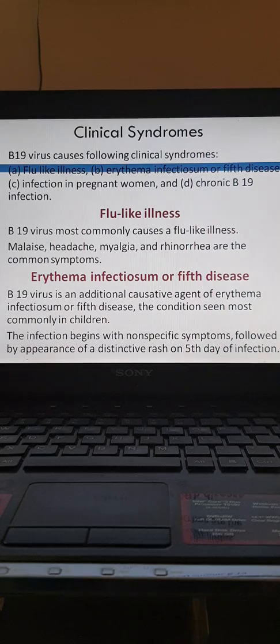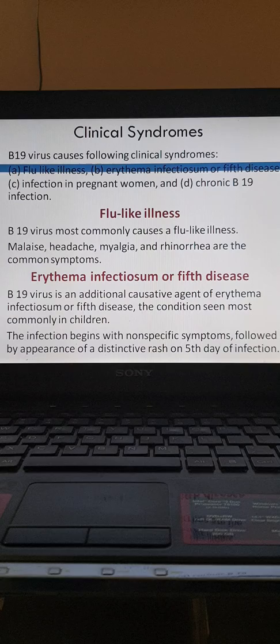This is a continuation on B19 parvovirus. It causes the following clinical syndromes: flu-like illness, arrhythmia, erythema infectiosum or fifth disease, infection in pregnant women, and chronic B19 infection. The flu-like illness presents with malaise, headache, myalgia, and rhinorrhea.